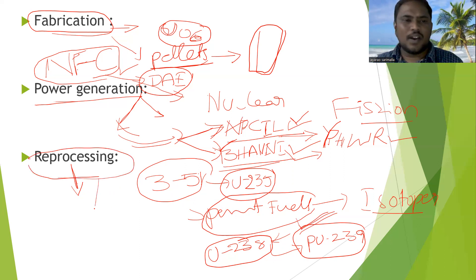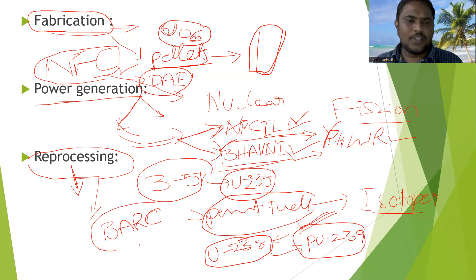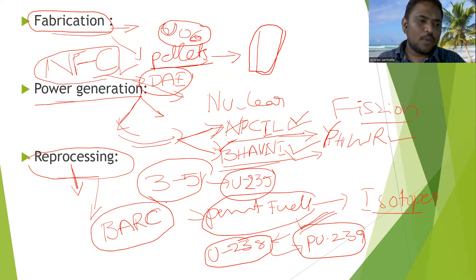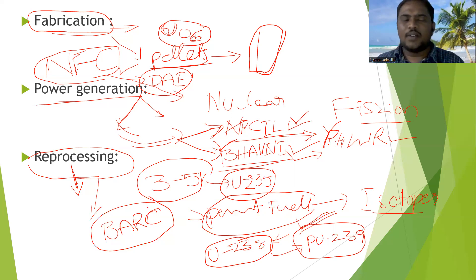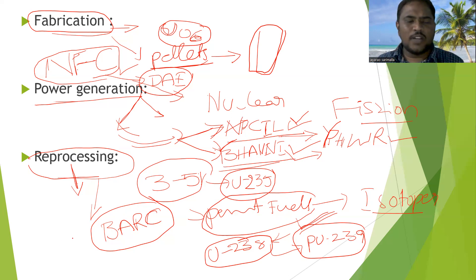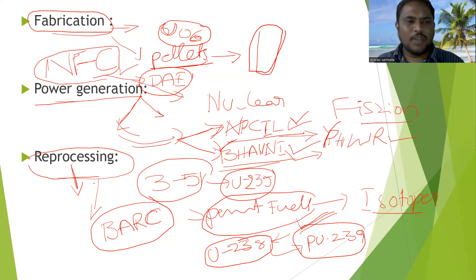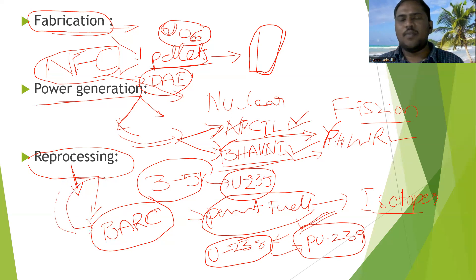Reprocessing is carried out by BARC — the Bhabha Atomic Research Centre. This is an important exam point. After reprocessing, the final step is nuclear waste management, which involves safe handling and disposal of radioactive waste from the nuclear fuel cycle.